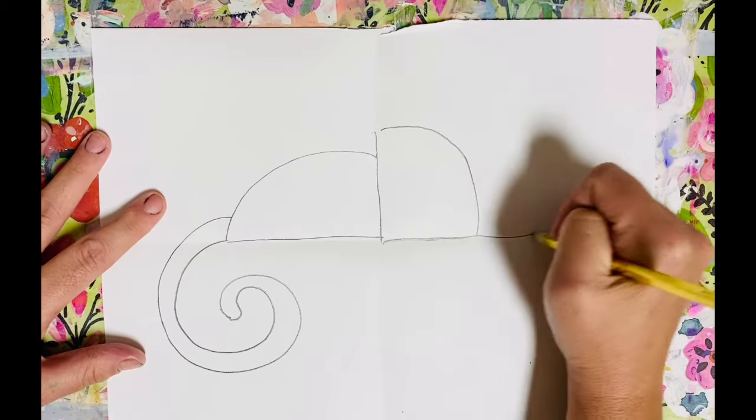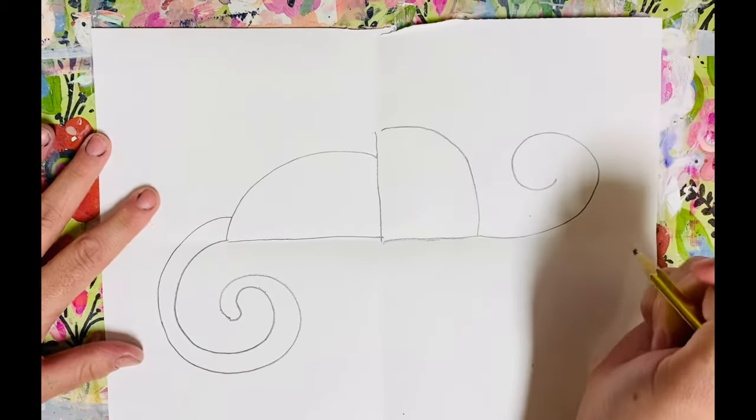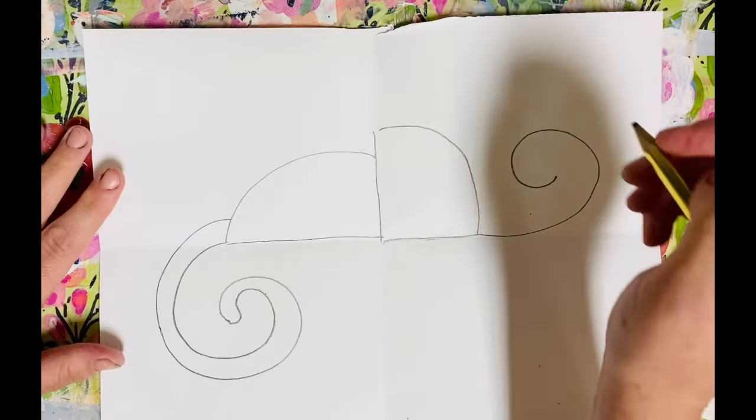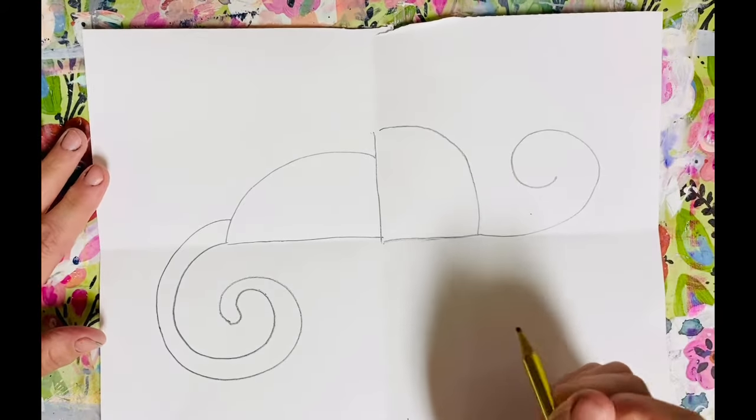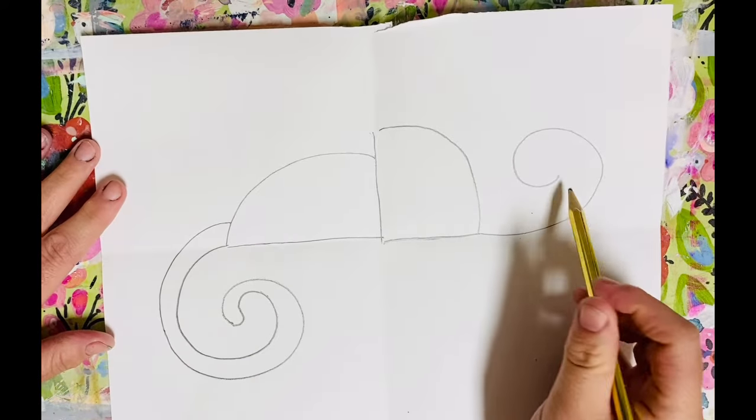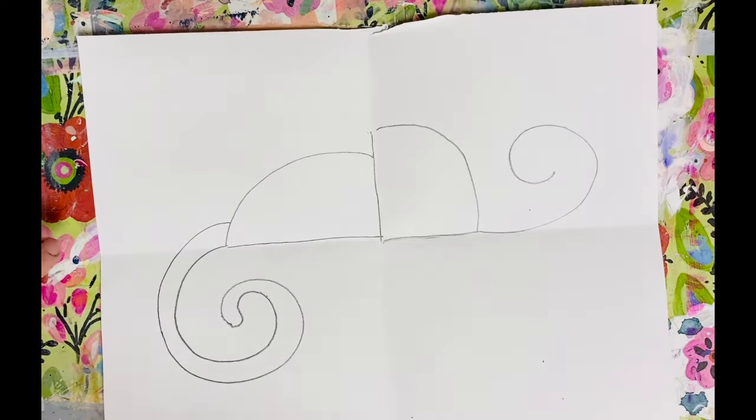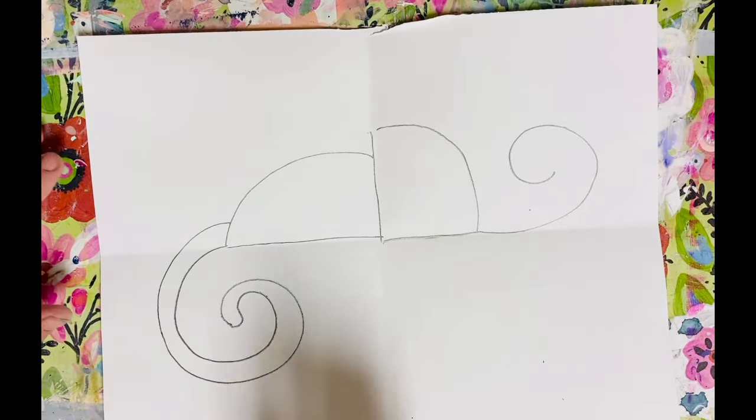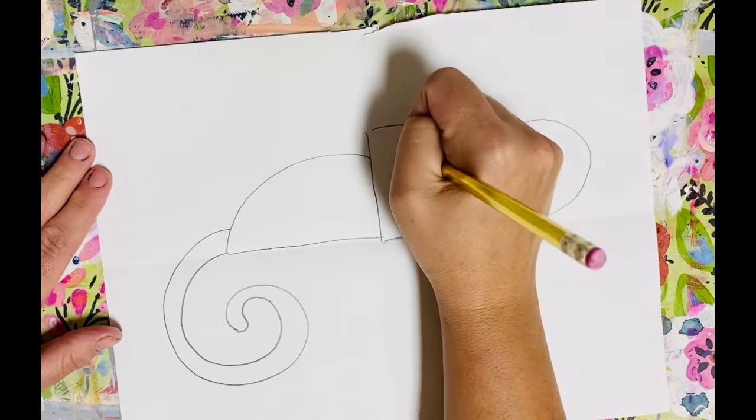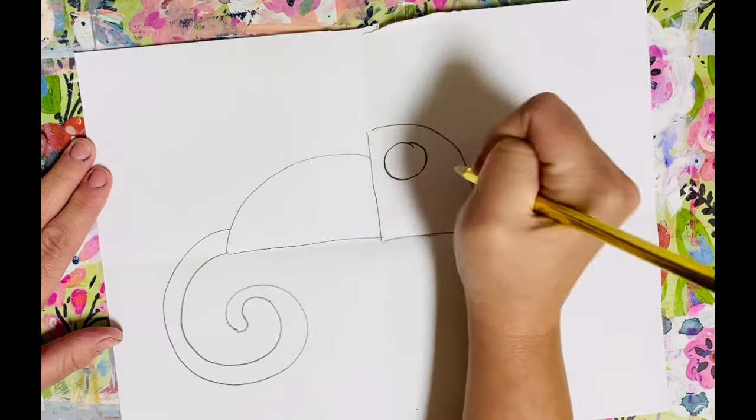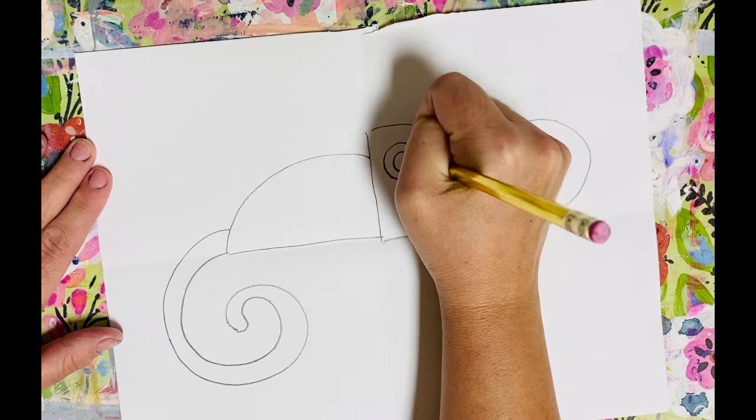Next up is his long tongue and that's a curve too out of his mouth. So this is just going to have this one skinny line. We don't need to make it thick like his tail is. Next step is a chameleon eye. So it's going to be one eye, one circle with a circle inside of that.